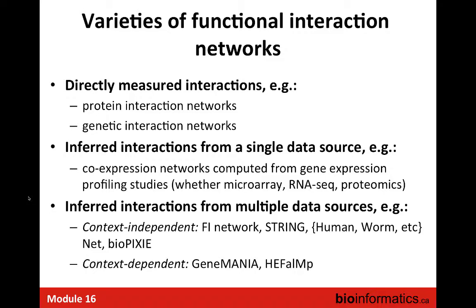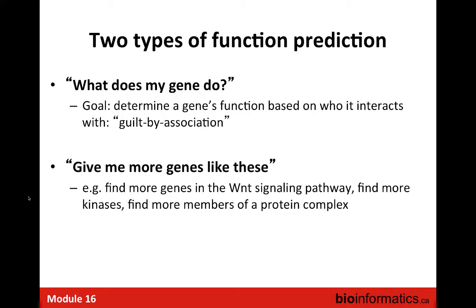We're going to use these interaction networks as the data sources we query to answer specific questions. One is: what does my gene do? The idea is we have a gene that showed up in a screen, maybe there's not much in the literature, but we want to get some idea of its functional role. The goal is to determine gene function based on who it interacts with. This is the guilt by association case — you know what a gene does by what the genes it interacts with do.